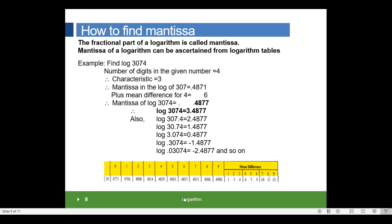For example, find log 3074. Here, the number of digits in the given number is 4. Therefore, the characteristic is 3. Mantissa is the log of 307. Refer to table 30 and column 7. It returns 4871. Plus add the mean difference for 4. Mean difference of 4 is 6. The total mantissa of log 3074 is equal to 0.4877.